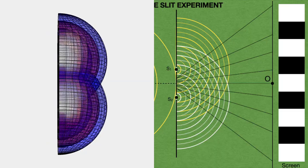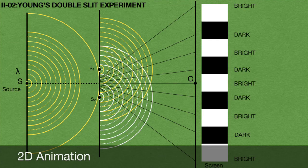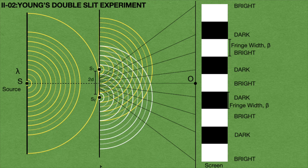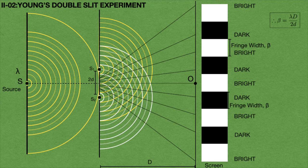Now going back to the 2D animation: the distance between any two successive dark fringes, or the distance between any two successive bright fringes, is called fringe width, denoted by beta (β). If the distance between the two light sources S1 and S2 is 2d, the distance between the sources and the screen is capital D, and the wavelength of the monochromatic light source is lambda (λ), then we can evaluate the fringe width beta from the formula: β = λD / 2d.